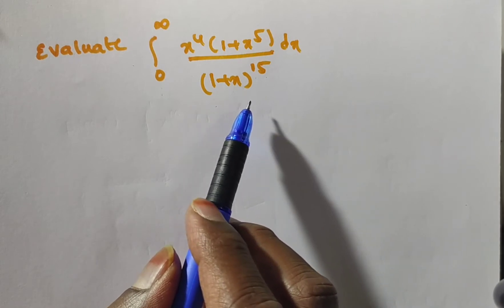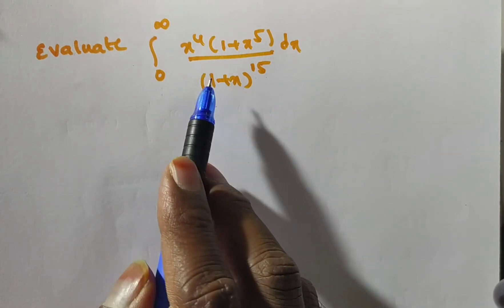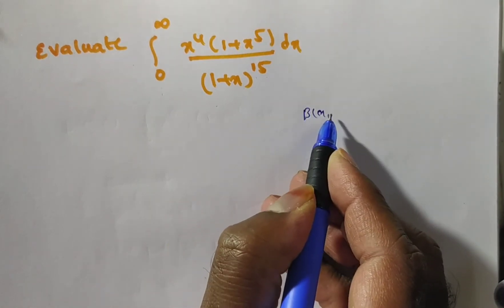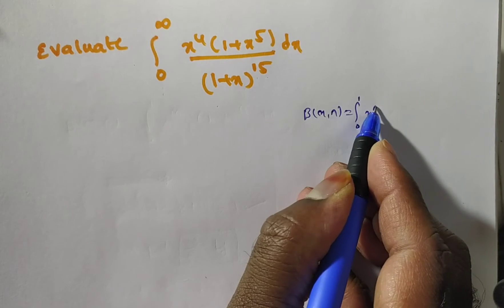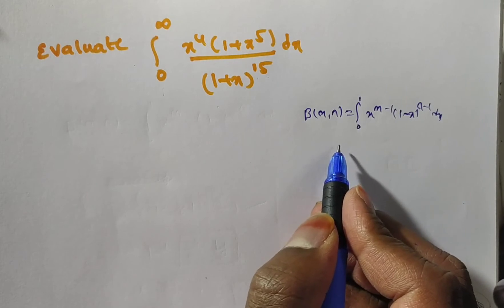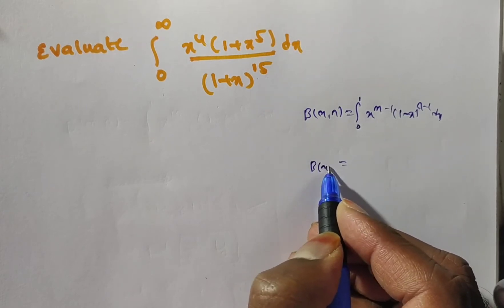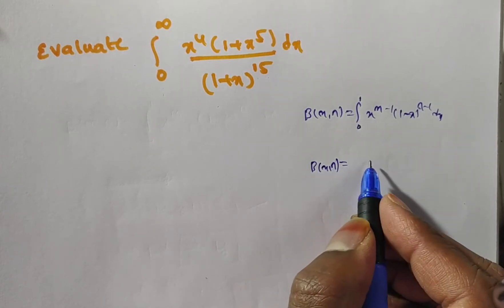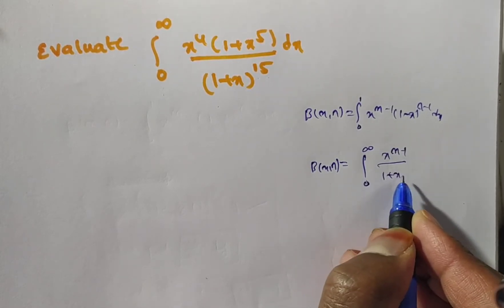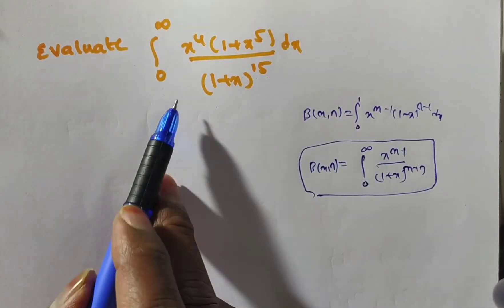We have 6 to 7 forms for the transformation of the beta function — any one of them we have to use. For Beta(m, n), we have different formulas. The first formula is: Beta(m, n) = integral from 0 to 1 of x^(m-1)(1-x)^(n-1) dx. If you substitute x = 1/(1+t), you get Standard Form 1: Beta(m, n) = integral from 0 to infinity of x^(m-1) / (1+x)^(m+n) dx.